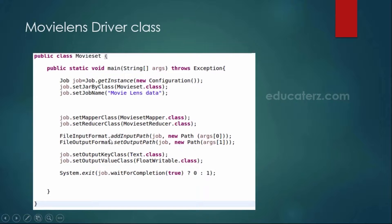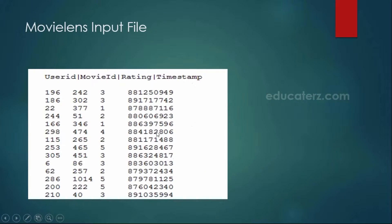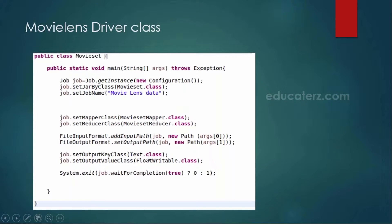The file input format and output format are the same as in word count — we read the input file with the file input format and the output format is for the output directories. The output key class and value class: I have given float writable because the average movie rating can be a float number. For the key class, you can use integer for the movie ID or text — either is fine, and here I am using text.